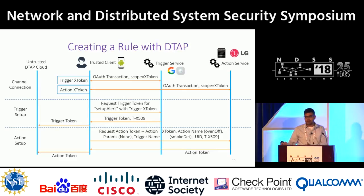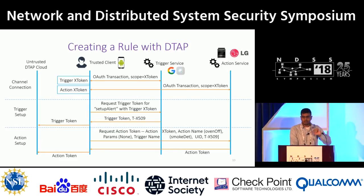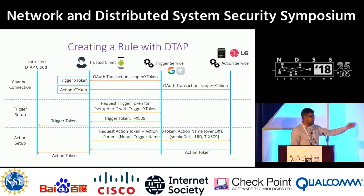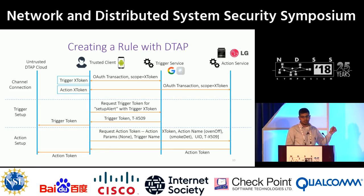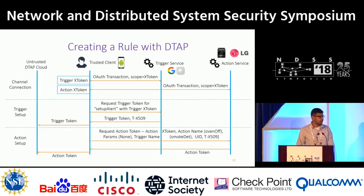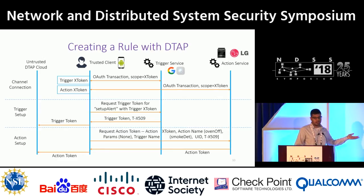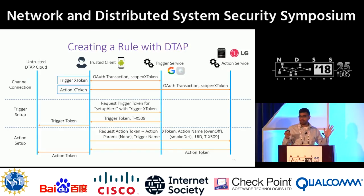Now we set up the action part of the rule — turn off the oven. The trusted client sends out a request saying: I want an action token to turn off the oven. Here is my action X token, some parameters (none in this case), the name of the trigger (smoke is detected), a user ID for the current user, and the public key certificate of the triggering service from the previous transaction. The action server associates all this information with a newly minted action token and transmits it to the trusted client, which forwards it to the untrusted DTAP cloud. At this point, the DTAP cloud has a trigger token, an action token, and the rule description — the rule is programmed and ready to run.